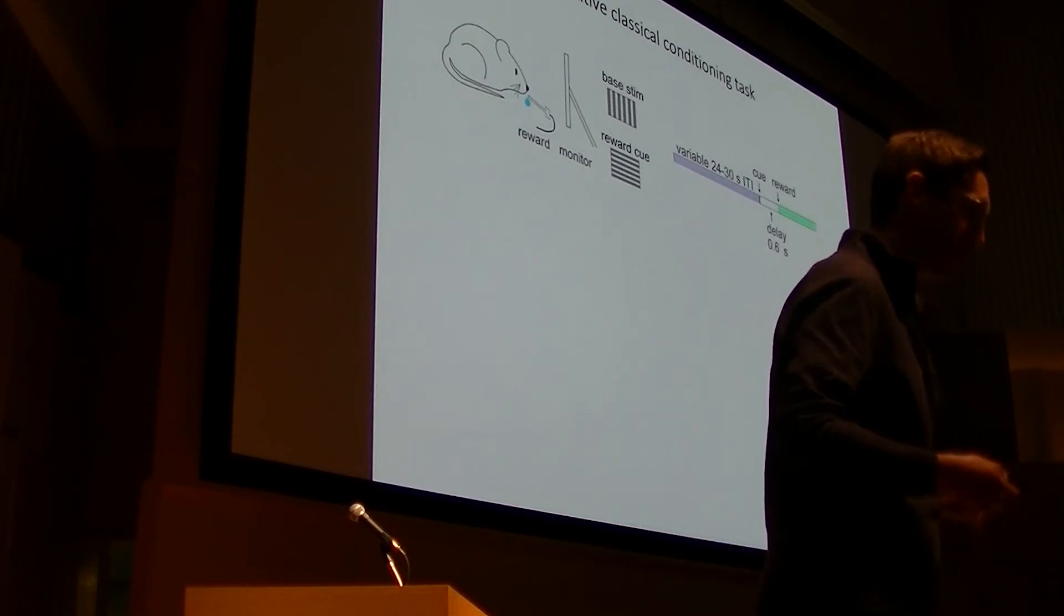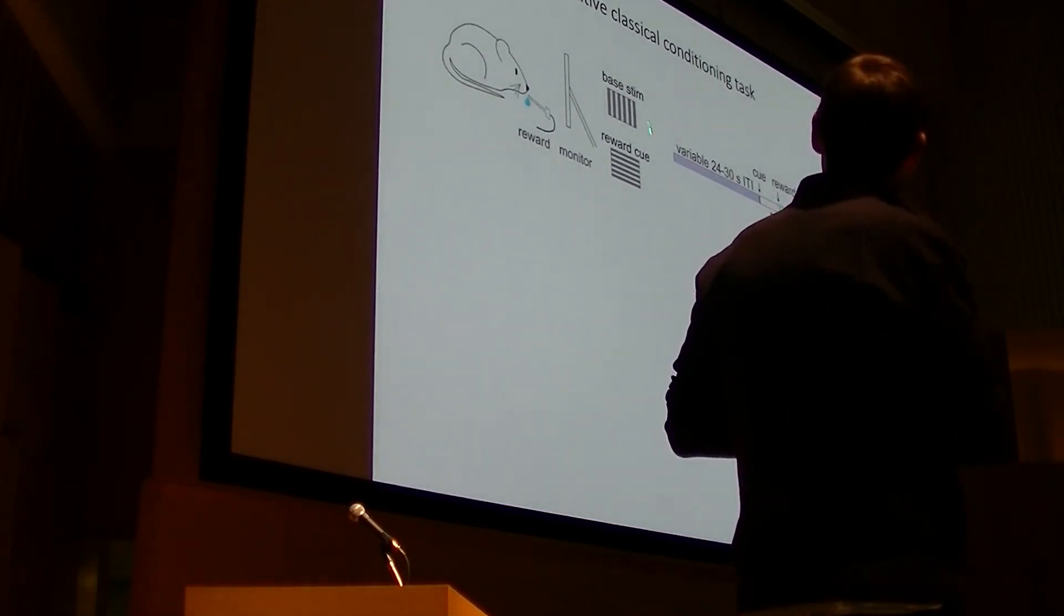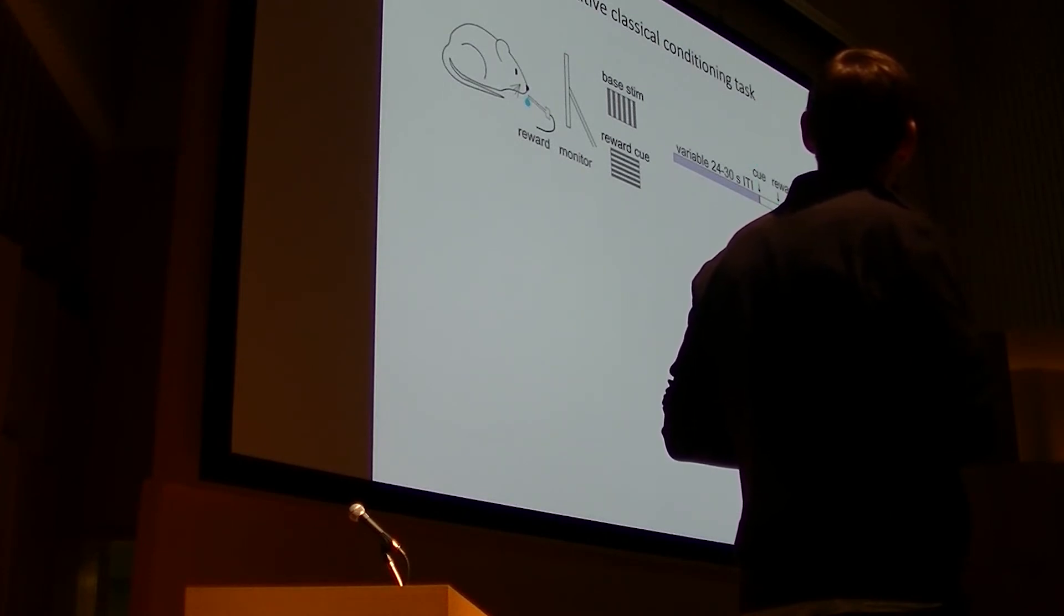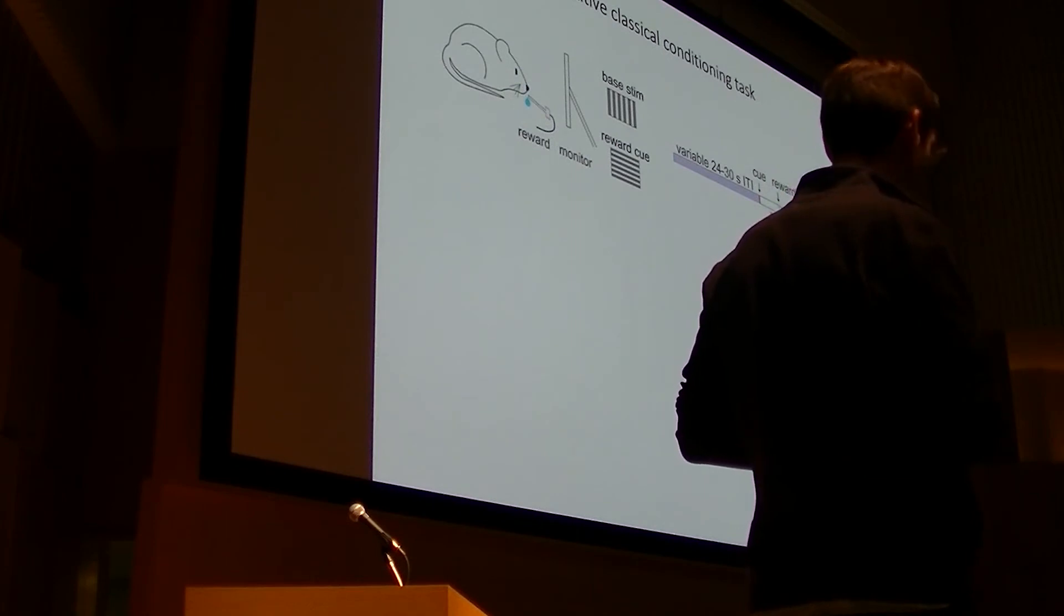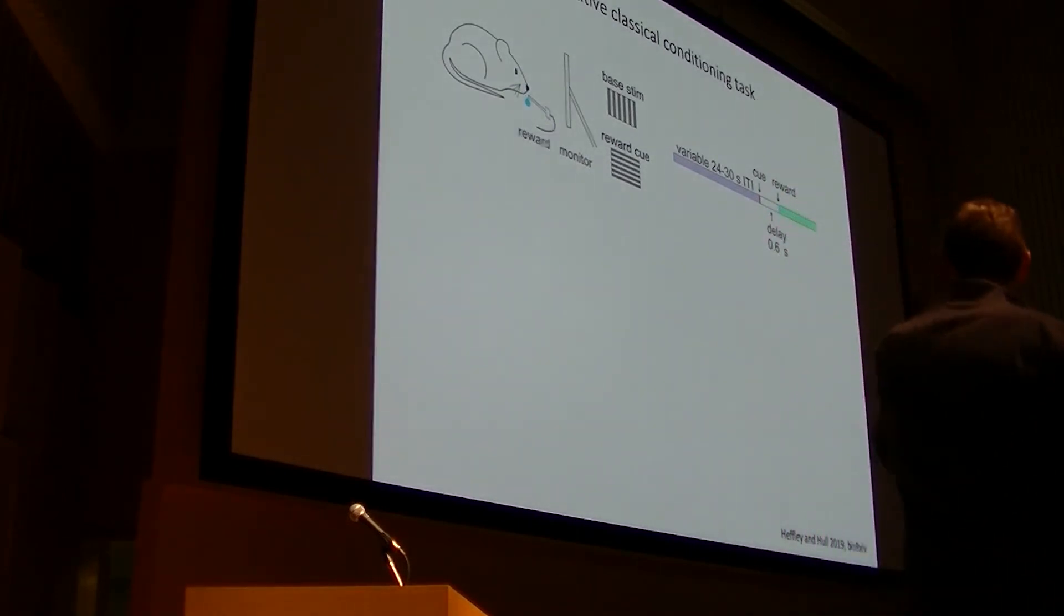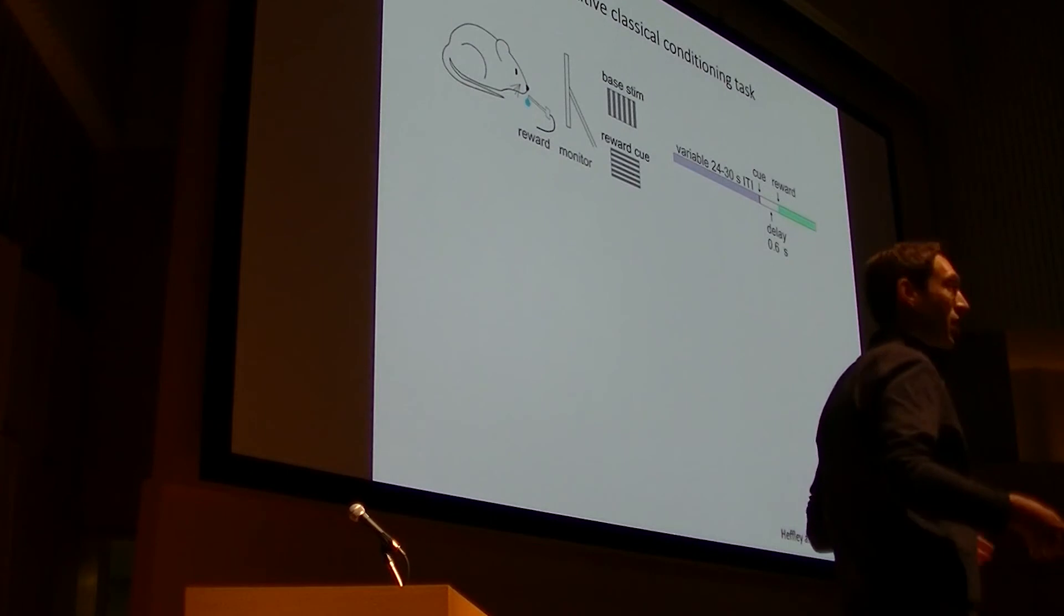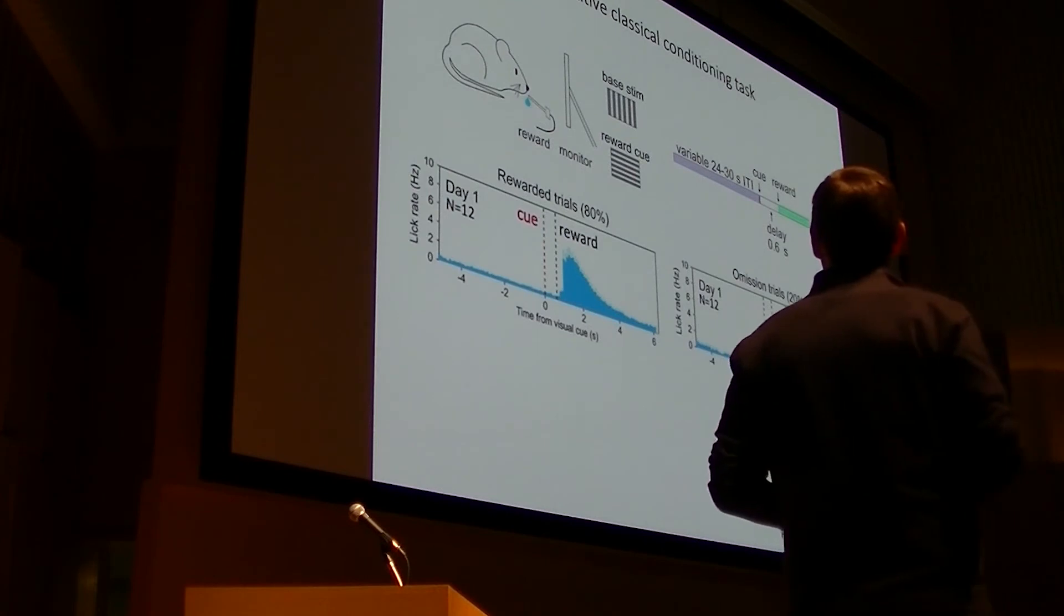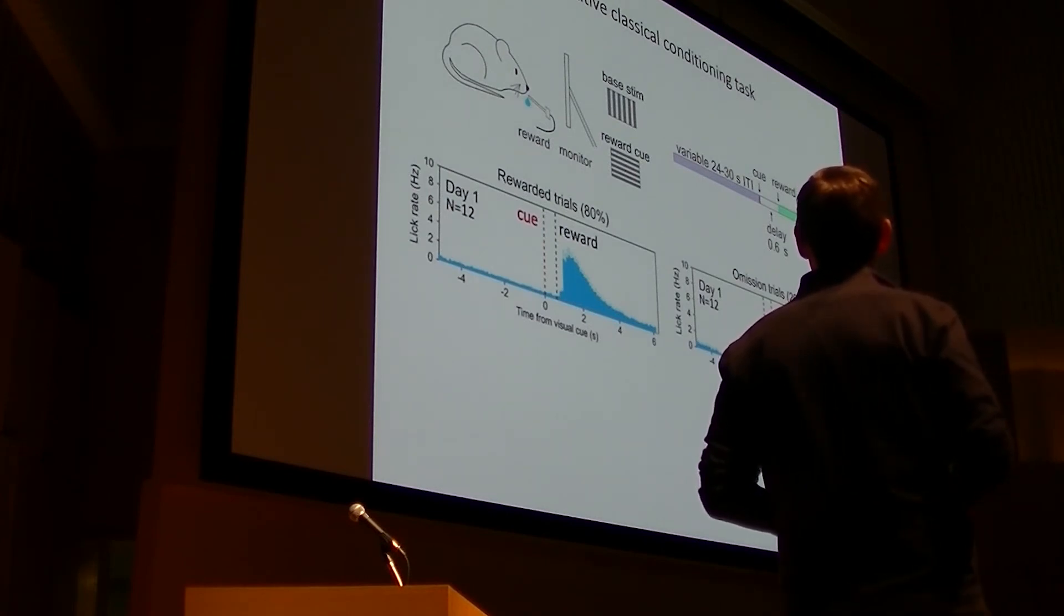which is a Pavlovian conditioning task of the type typically used to study reward processing in structures such as VTA. So now the task is similar but different in one key way. The animal is sitting in front of the video monitor and is viewing the same vertical grating but we're taking the lever away. And so now what happens is that after a long and variable ITI, the cue comes, there's a delay interval of a few hundred milliseconds, and then reward is delivered. And to be clear, in this task the animal doesn't have to do anything for the reward to be delivered. It has to lick to collect the reward, but whatever it does, it has no bearing on the outcome of the trial.